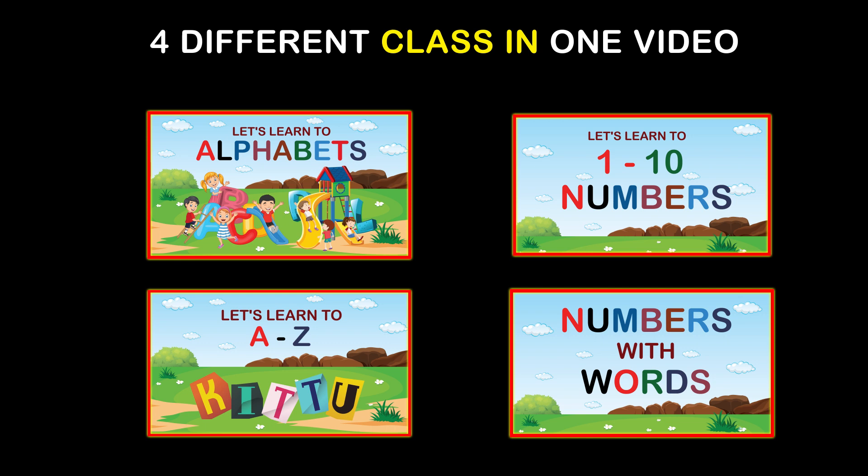Hello kids! Today we are learning four different classes in one video. In class 1, two types of ABC alphabets. And in class 2, two types of 1 to 10 numbers. Let's start.